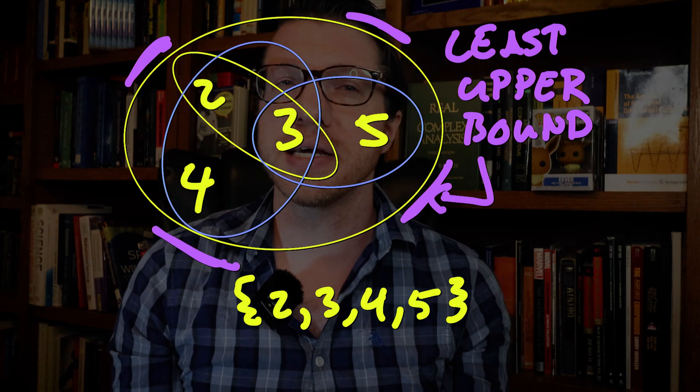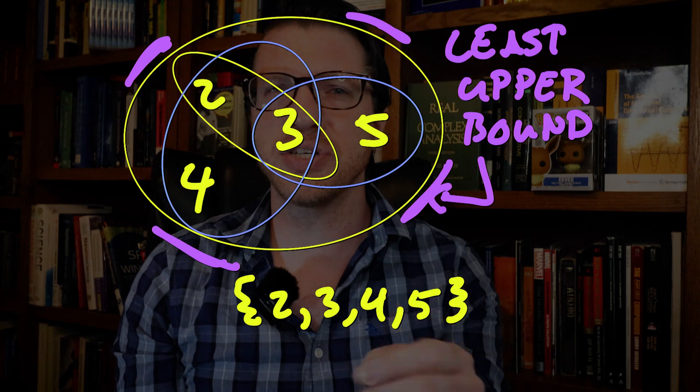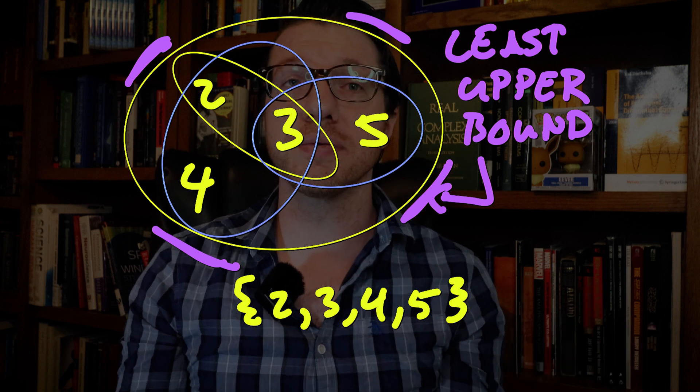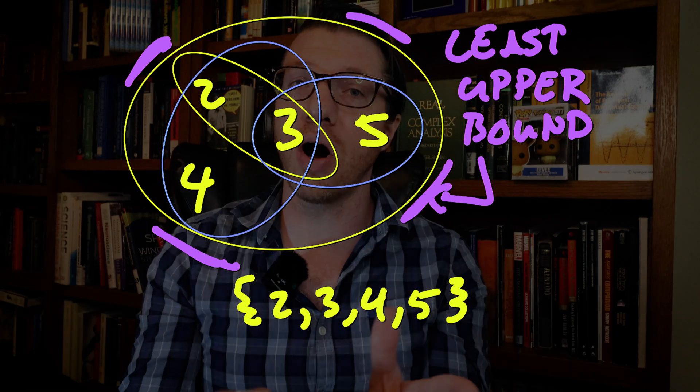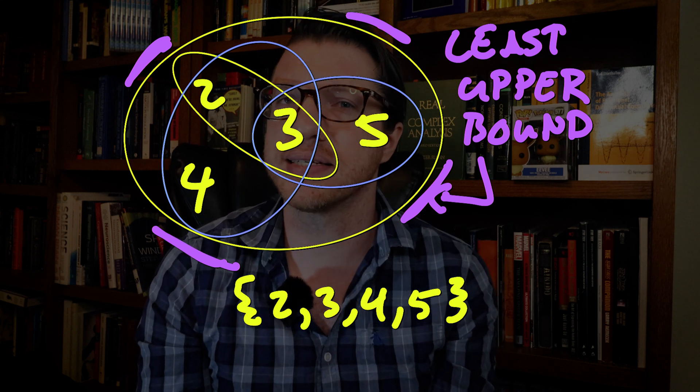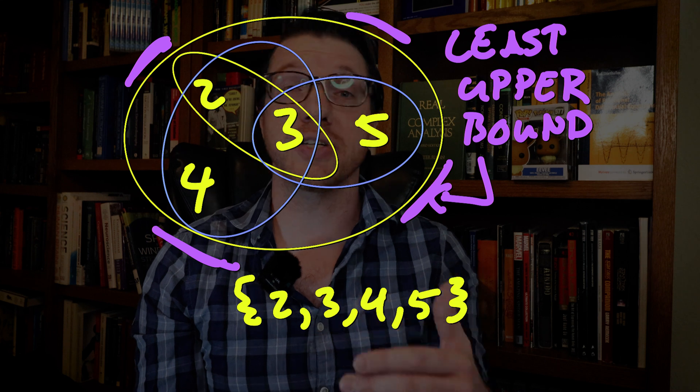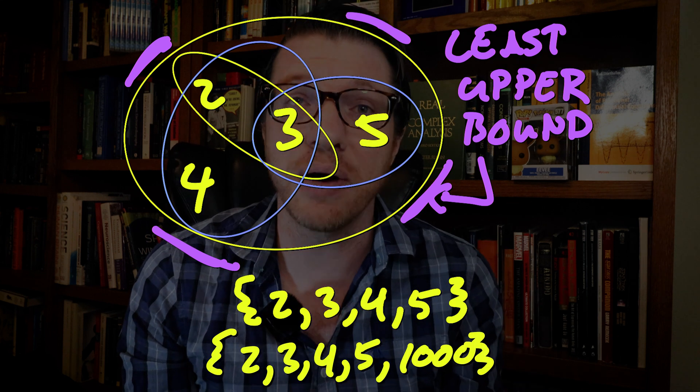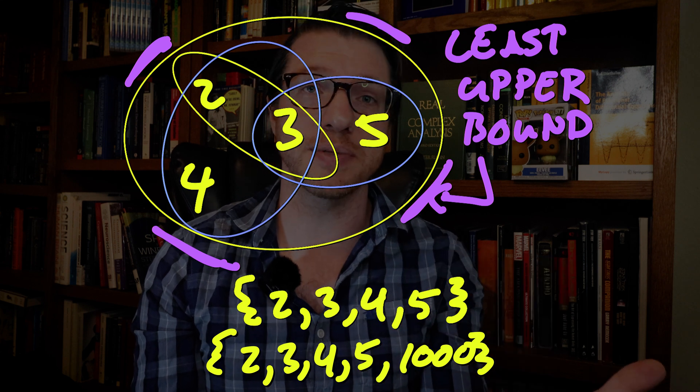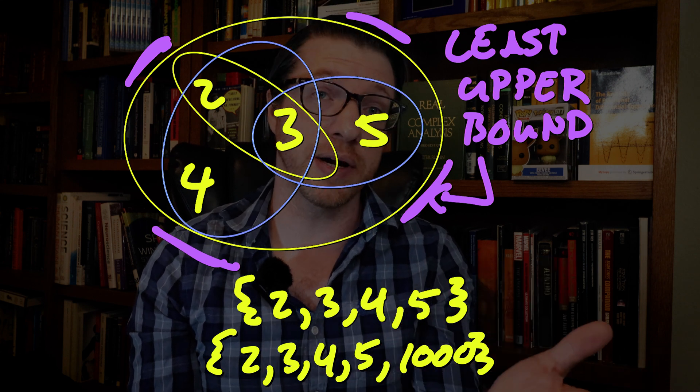This subset is larger than all the others in that each is contained inside of it. And if we remove any one point, then it is no longer bigger with respect to our ordering. Now there are other upper bounds. In fact, if we add anything to the set 2, 3, 4, 5, such as say 6 or 1000,